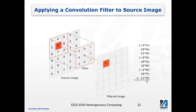Now let's look at this example. We're showing a source image, and we want to apply some kind of filter to get a filtered image. On the left side, we're showing a 5 by 6 source image, and the values in each of these grid boxes represent the grayscale or color scale of that pixel. We can see here we have a small 3 by 3 region in the original image, with values in these corresponding pixels.